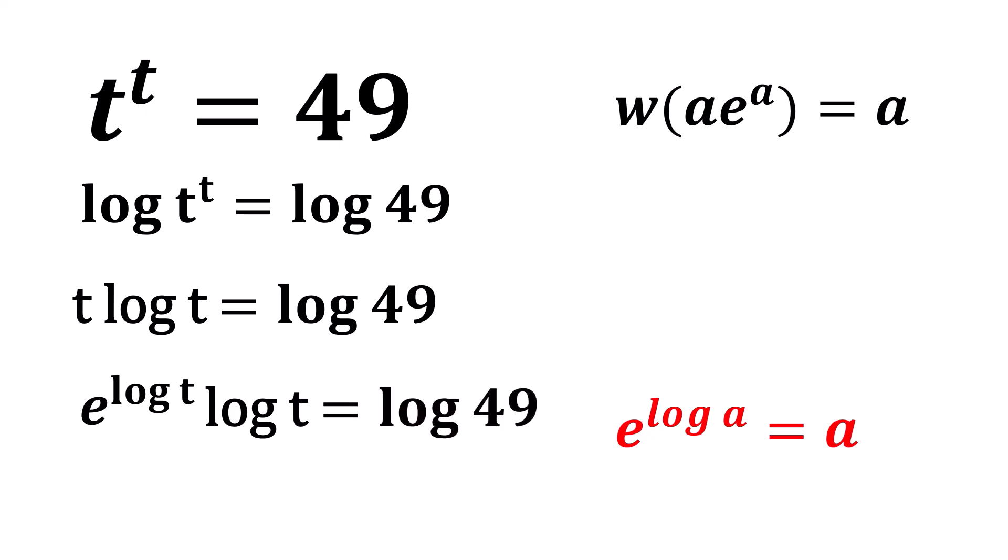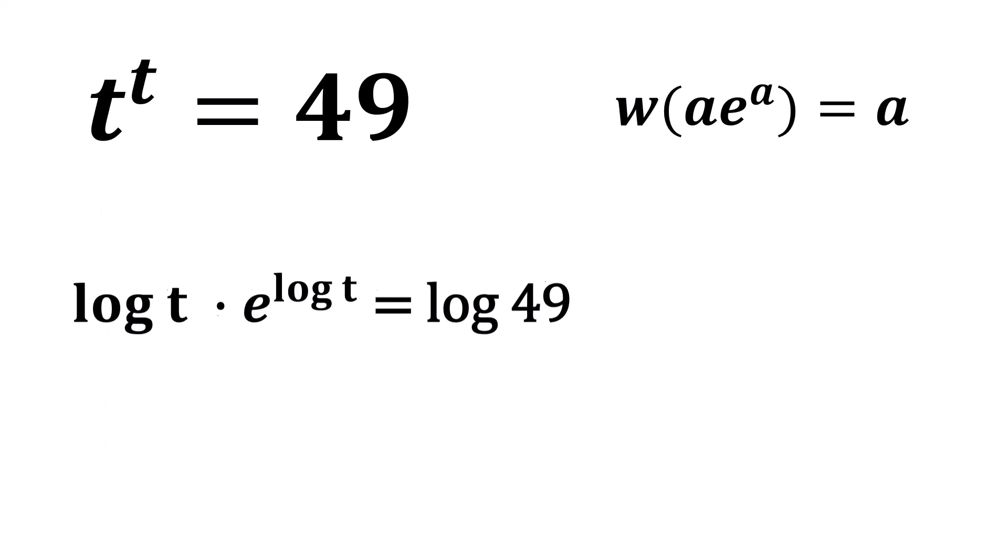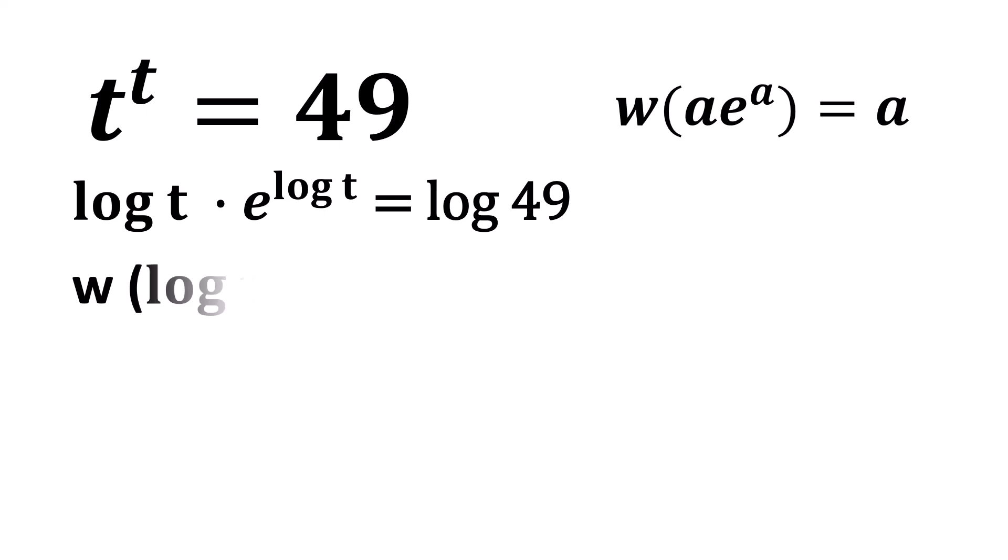Rearranging, we can write log t times e to the power of log t equals log 49. Taking the Lambert W function on both sides, we get W of log t times e to the power of log t equals W of log 49.